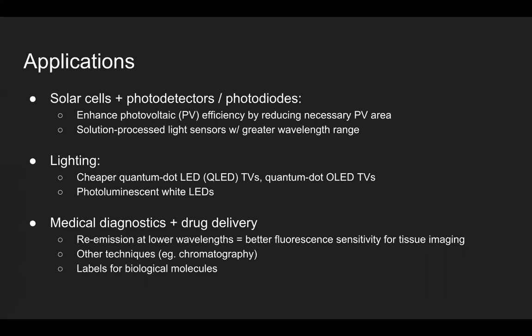Quantum dots have a wide range of applications in a variety of domains, ranging from energy production to sensing and lighting to medical and biological research. Quantum dots can be used to enhance the efficiency of solar cells by absorbing light within a polymer matrix and re-emitting this light at lower wavelengths that is then redirected to a smaller solar cell. This allows the solar cell to be smaller and therefore cheaper, and it's particularly useful for solar cells made of materials such as gallium arsenide and indium phosphide, which are way more efficient than silicon, but are also more expensive.